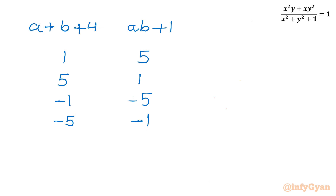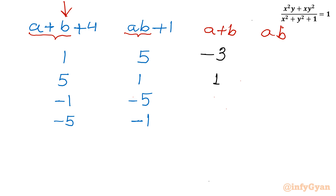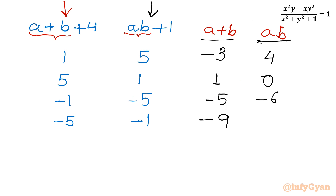Let me make a chart with columns for (a+b+4), (ab+1), then derived (a+b) and (ab). Subtracting 4 from the first column gives a+b values: -3, 1, -5, -9. Subtracting 1 from the second column gives ab values: 4, 0, -6, -2.